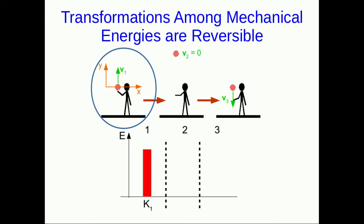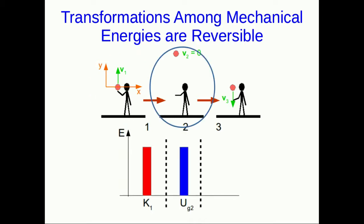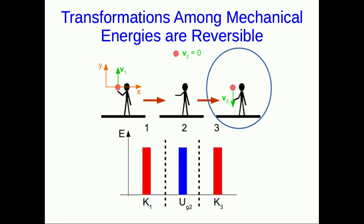In other words, when you transform the energy from one type to another, you can easily transform it back. For example, when you throw a ball up into the air, as it leaves your hand it has a lot of kinetic energy. When it's at the top of its trajectory and momentarily stationary, all of that kinetic energy has been turned into gravitational potential energy. But then as it moves back down, when it returns to its original height, all of that gravitational potential energy has been turned back into kinetic energy.